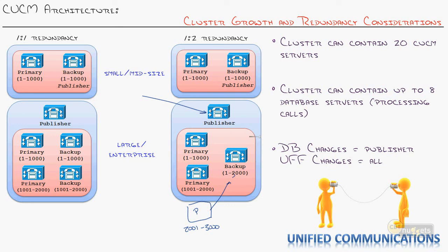That fills in the gaps on cluster design for redundancy and growth, and shows how big you can grow a cluster. But what happens when you hit eight servers? You're not maxed out — you just create another cluster. When we talked about distributed designs with multiple clusters over the WAN, you can create numerous clusters, each supporting up to 30,000 IP phones. One database has its limitations, but you can grow as large as you need. I hope this has been informative, and I'd like to thank you for viewing.